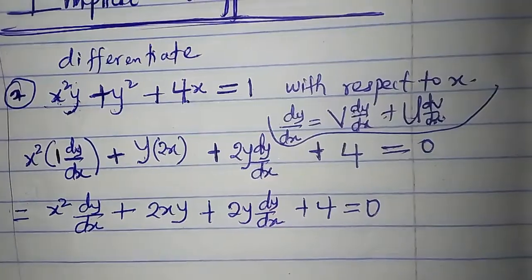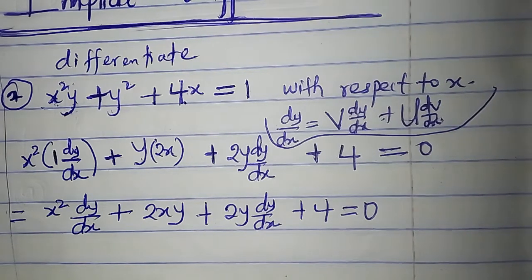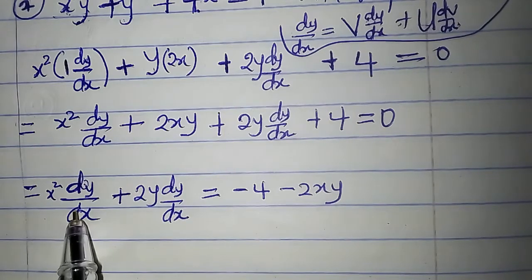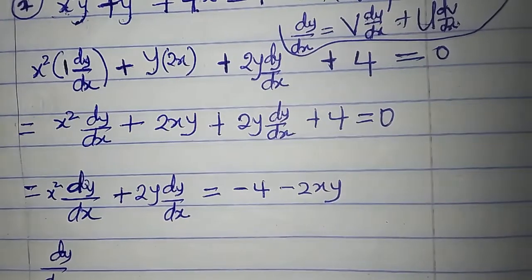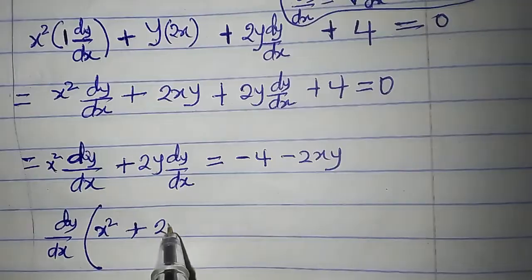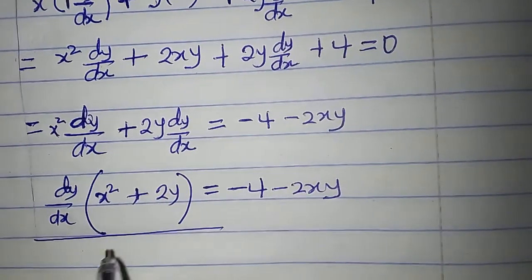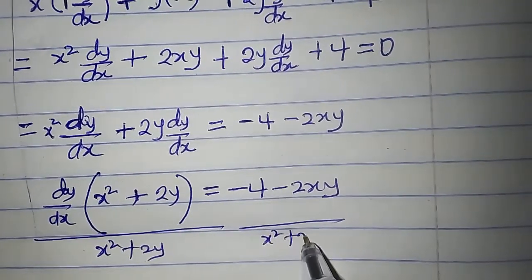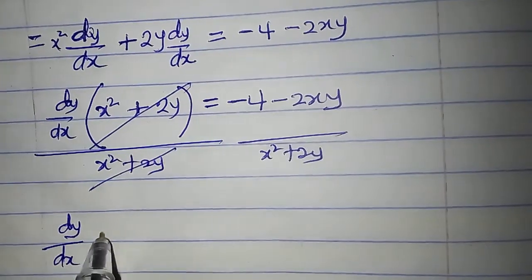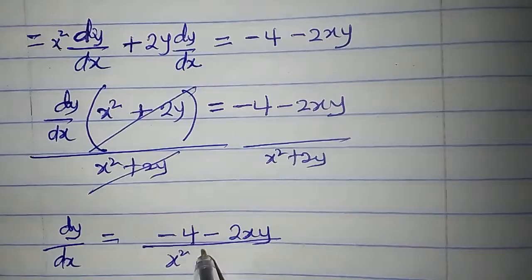We are going to make dy/dx the subject of the formula. All terms not containing dy/dx move to the other side. At the left-hand side, we factor out dy/dx, leaving x squared plus 2y, which equals minus 4 minus 2xy. Dividing both sides by x squared plus 2y, dy/dx equals (minus 4 minus 2xy) divided by (x squared plus 2y).